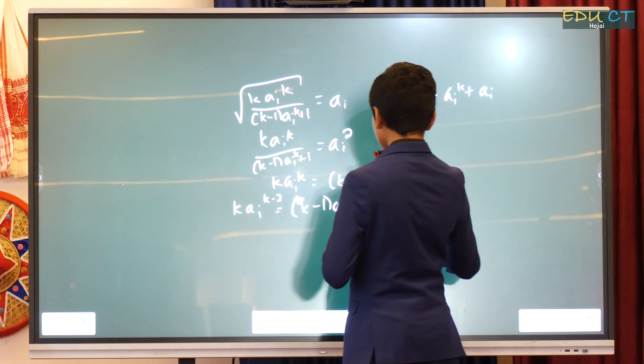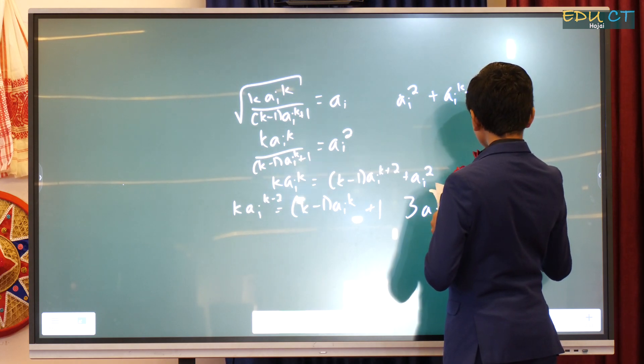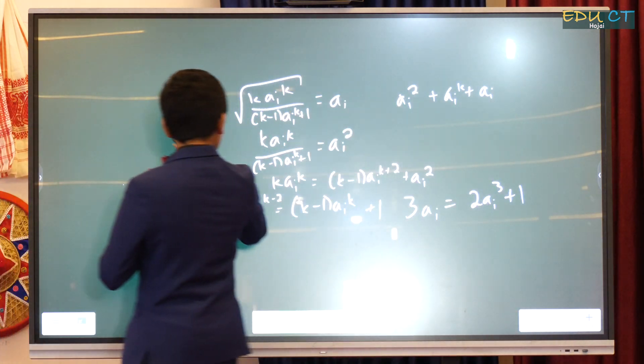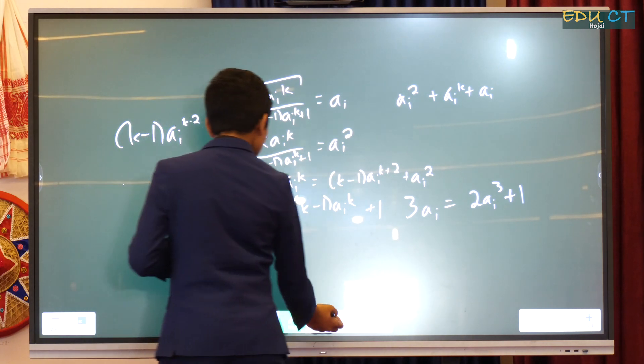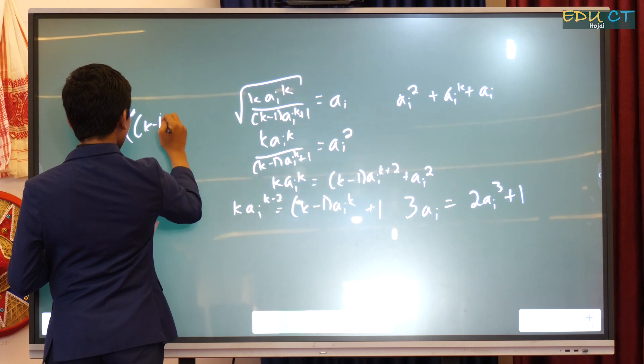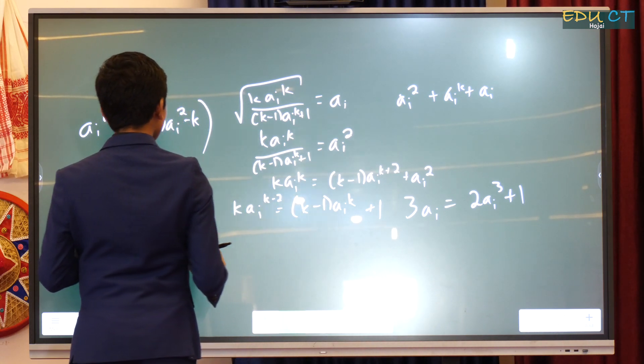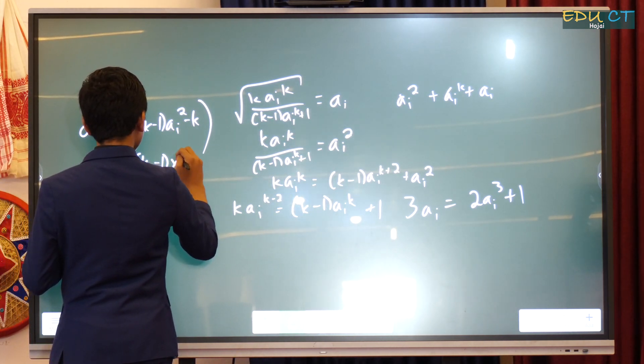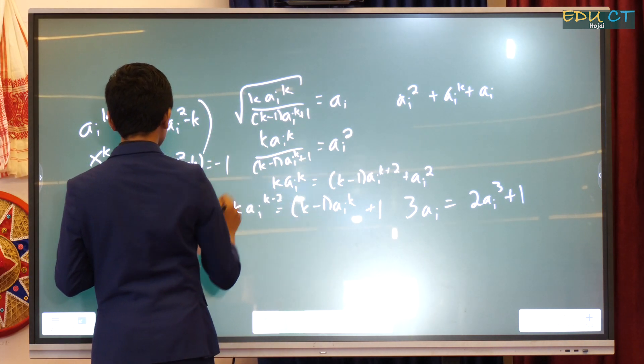No. K equals 3. Then, we get 3 AI has to be equal to 2 AI cubed plus 1. So, then, we get... Oh, boy. So, we might want to factor out AI to the K minus 2. Oh, okay. So, let's factor out AI to the K minus 2 to get K minus 1 AI squared minus K.